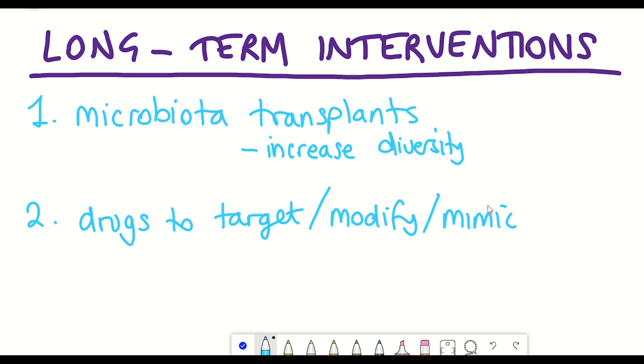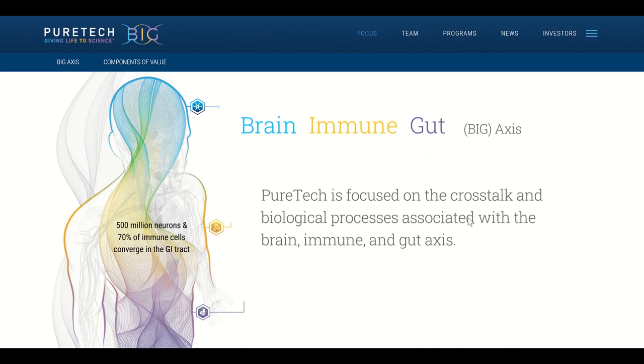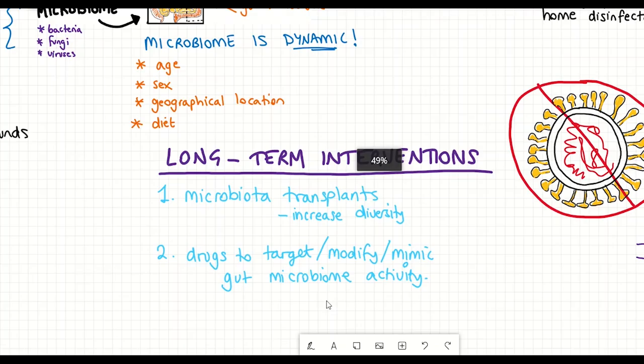Alternative interventional strategies include the development of drugs that can target, modify or mimic the gut microbiome activity. For example, one company that I know is researching this area is PureTech, which is asking the questions, what if we could treat immune and infectious diseases by mimicking the ways in which the gut microbiota maintains a healthy immune system in humans?